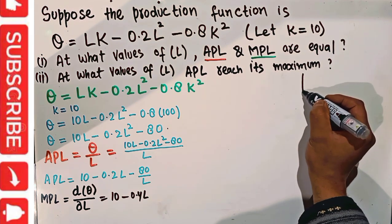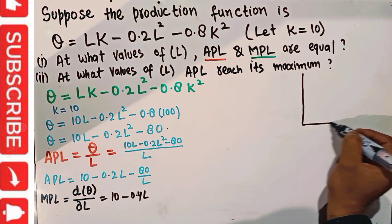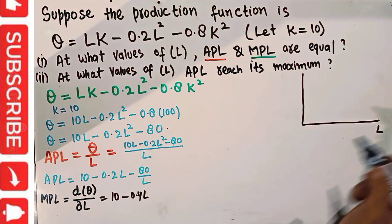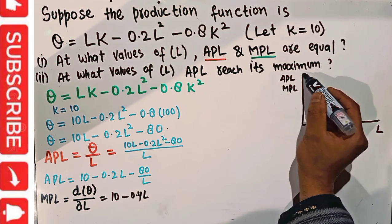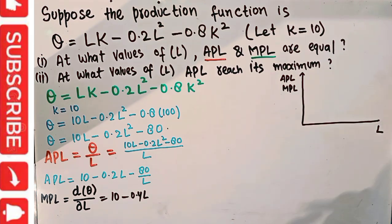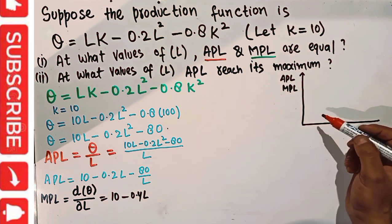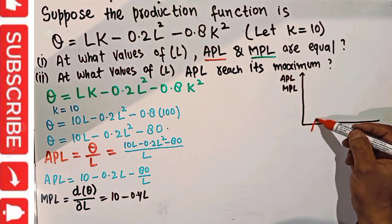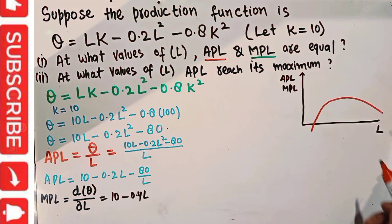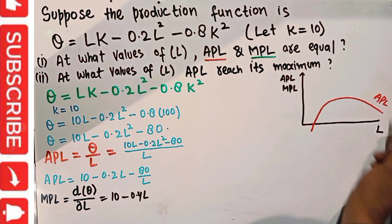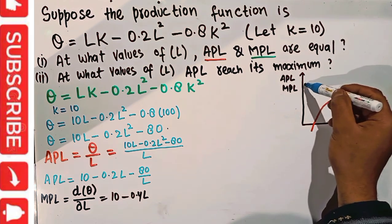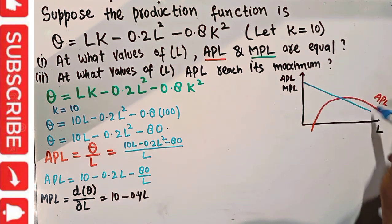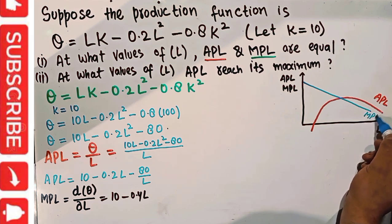Graphically, we have units of labor on the horizontal axis and APL and MPL on the vertical axis. The APL curve is an inverted U-shape, while the MPL has an intercept of 10 and a negative slope, lying below the APL curve.